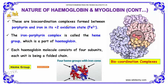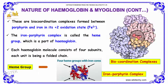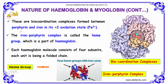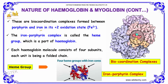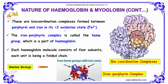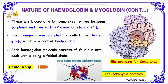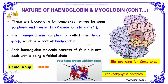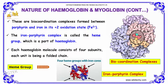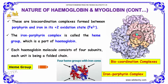These are coordination compounds and complexes formed between porphyrin and iron in its +2 oxidation state. The iron-porphyrin complex is called the heme group, which is the part of hemoglobin.